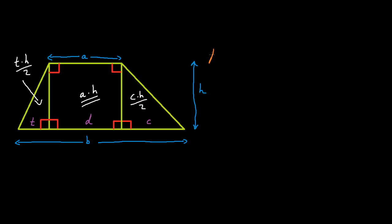Knowing this, the area of this trapezium is equal to A multiplied by H plus C multiplied by H divided by 2 plus T multiplied by H divided by 2. Now, we can simplify this formula further. So we get 2AH over 2 plus CH over 2 plus TH over 2.